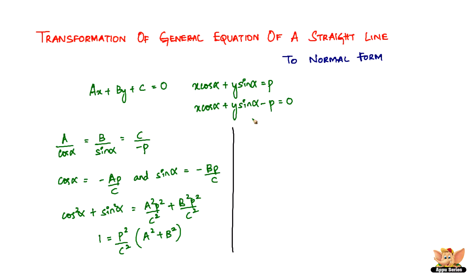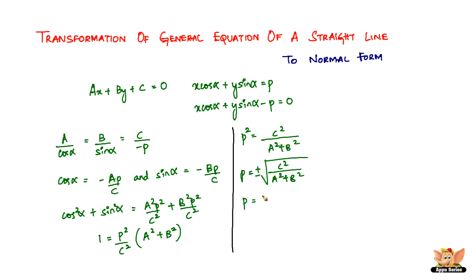From this we can find p. Writing p² equal to c² divided by (a² plus b²), p equals plus or minus the square root of c² over (a² plus b²), which simplifies to plus or minus c over the square root of (a² plus b²). Since p denotes the length of the perpendicular — a distance — it can only be positive. Therefore, p equals c over the square root of (a² plus b²).